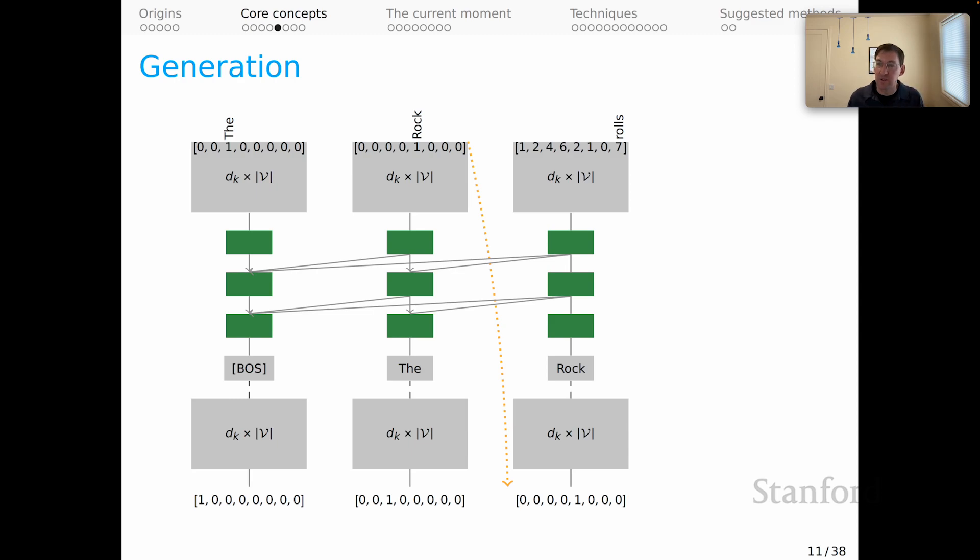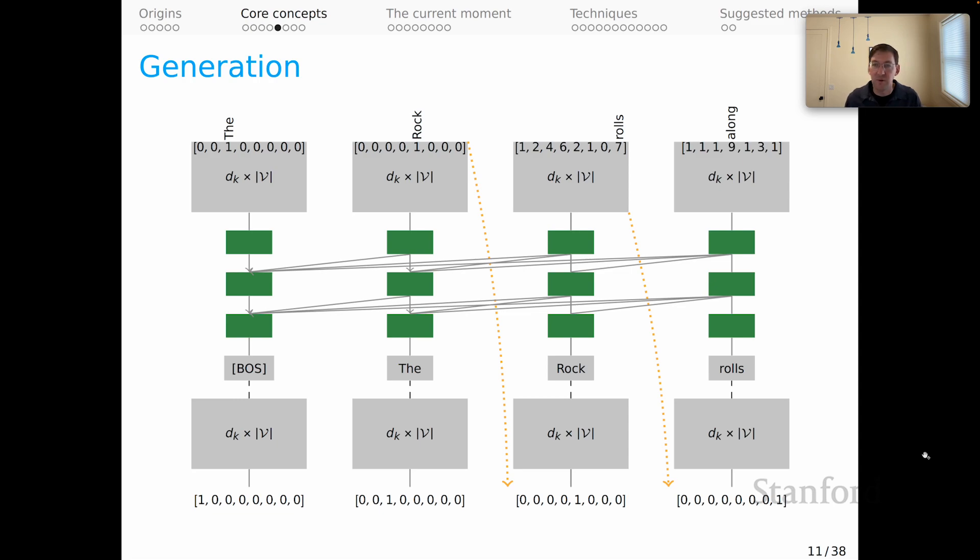In this case, we could think of the prediction as roles. Roles comes in as a one hot vector at the next time step, and we continue our predictions. That's the generation process. Again, I want to emphasize that at each time step, the model is predicting score vectors over the vocabulary.